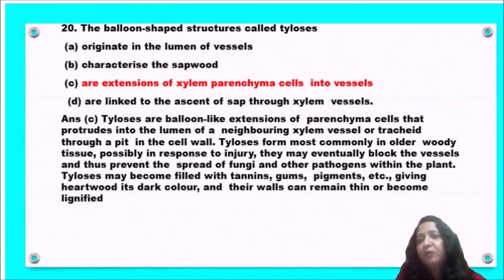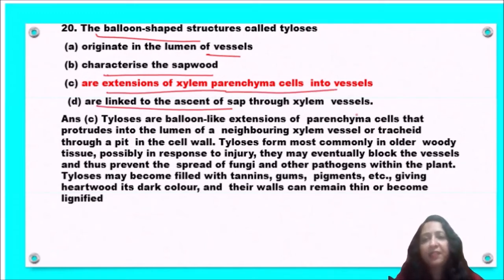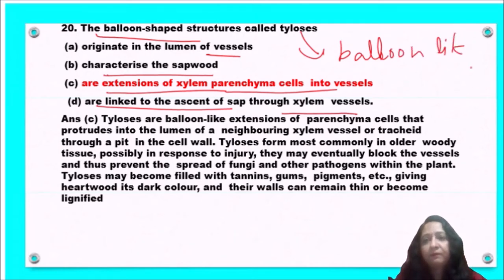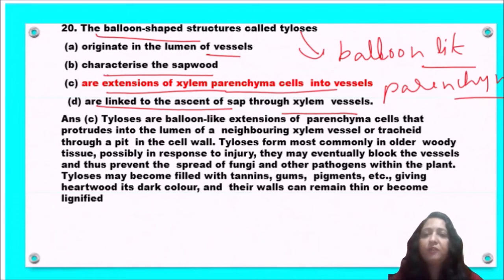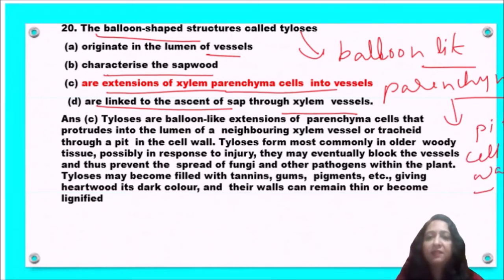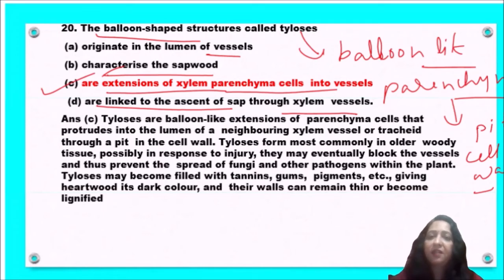Next question involves the balloon-shaped structure called tyloses. Tyloses are balloon-like extensions of parenchyma cells that protrude into the lumen of neighboring xylem vessels or tracheids through pits in the cell wall. They are common in older woody tissues and block vessels, preventing entry of fungi and other pathogens. So option C — tyloses are extensions of xylem parenchyma into vessels — is the correct answer.